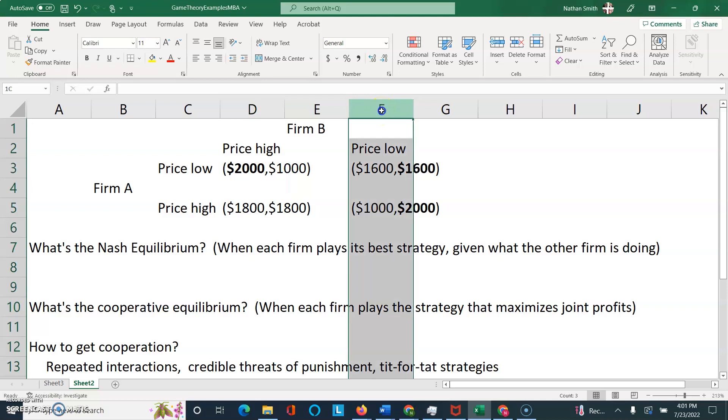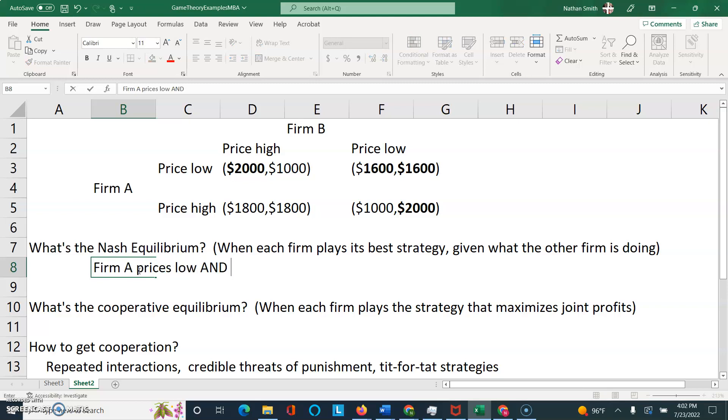Now, we're almost done because there's only one option left, and that's if Firm B decides to price low. Again, I want to compare the two numbers on the left-hand side for Firm A's profits to figure out what it should do. So, if Firm A prices low, it gets $1,600. If Firm A prices high, it gets only $1,000. $1,600 is better than $1,000. So, I'm going to put the bold there. Now, wherever you have two bolds, the corresponding strategies are going to be a Nash equilibrium because we went through it column and row to figure out what the best strategy would be for each firm. So the answer to the first part of the question is actually that Firm A prices low and Firm B prices low.